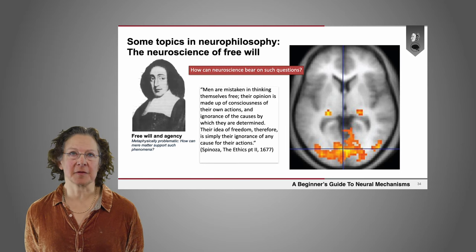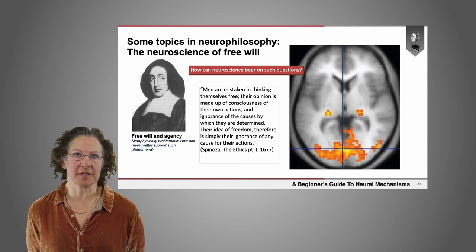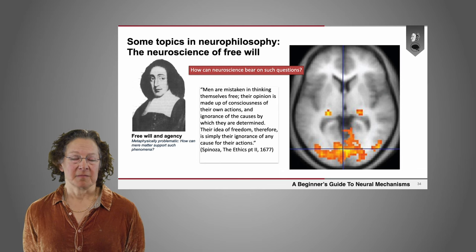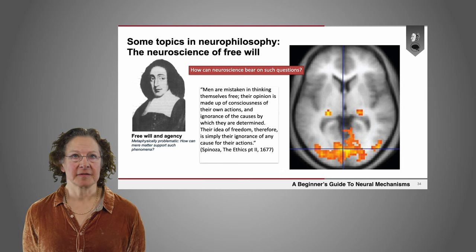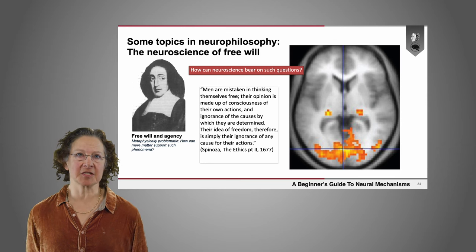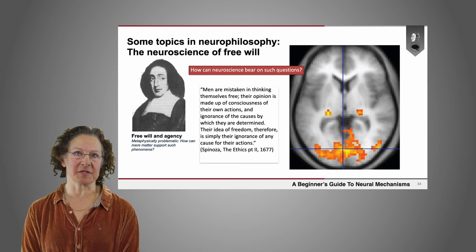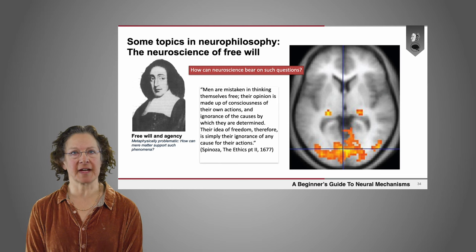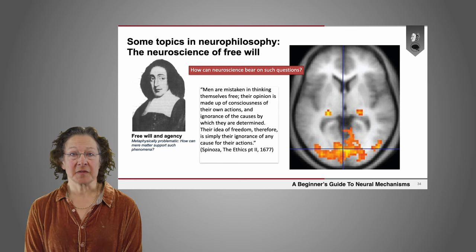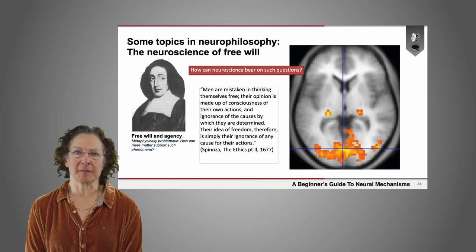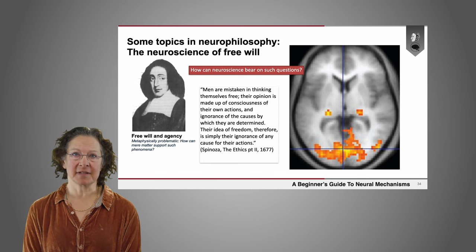Here I'm going to walk you through some recent work in the neuroscience of free will and the way in which it bears on neurophilosophical questions. More than 300 years ago, Spinoza said: 'Men are mistaken in thinking of themselves free. Their opinion is made up of consciousness of their own actions and ignorance of the causes by which they're determined. Their idea of freedom, therefore, is simply their ignorance of any cause for their actions.' Spinoza thought that men weren't really free — we were all determined, and we only thought we were free because we were under the illusion that we weren't determined.